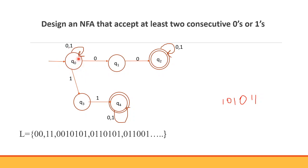We have a transition from Q0 to Q1, and a transition from Q1. Q1 on input 0 leads further. Q3 on input 1 leads to Q4. All these transitions define our NFA. So this NFA is easy to construct compared to a DFA for the same problem.